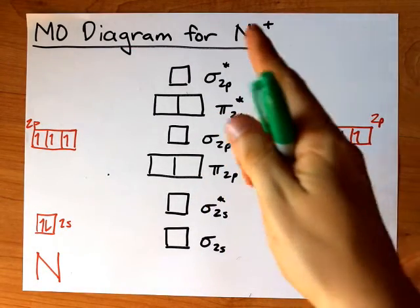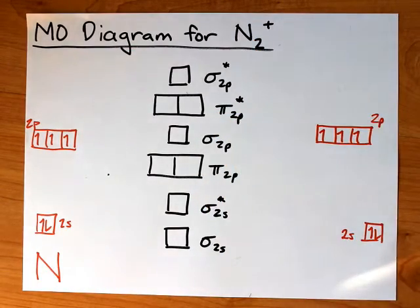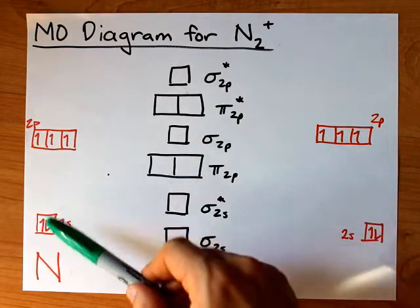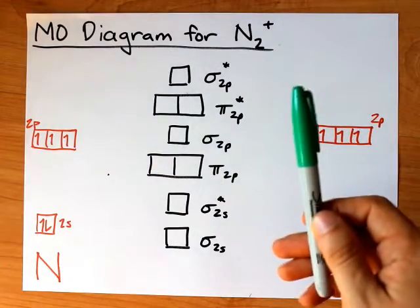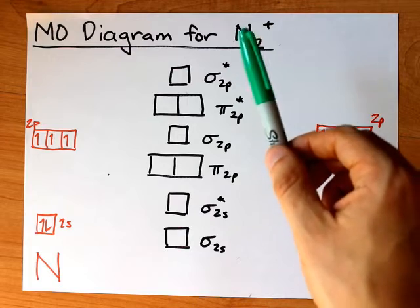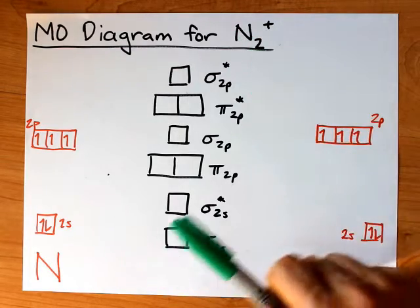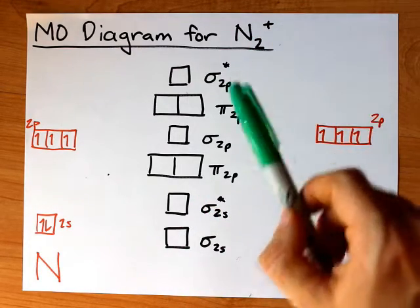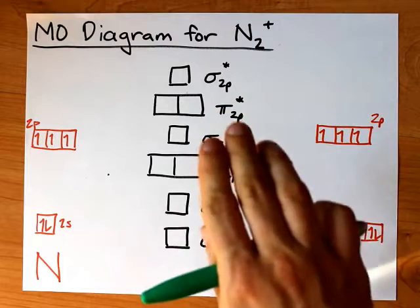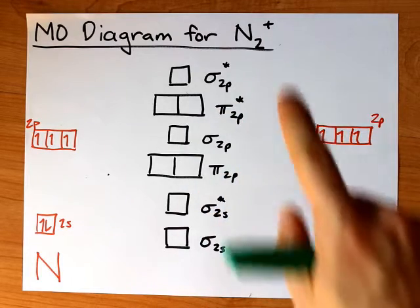Let's draw the molecular orbital diagram for N2 with a positive 1 charge. Nitrogen brings 5 valence electrons with it normally. That would make 10 valence electrons total for the N2 molecule, but with a positive 1 charge, it means we actually only have 9 valence electrons.